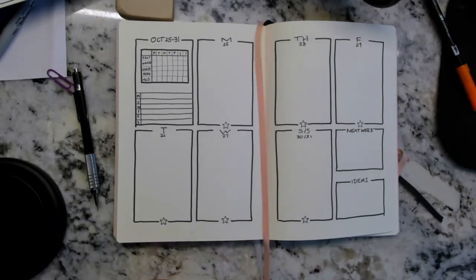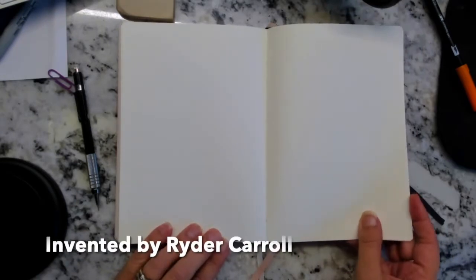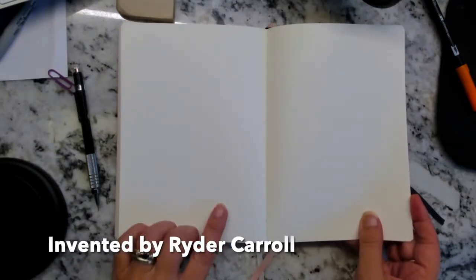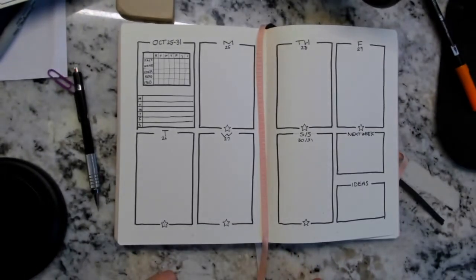I've already set up my bullet journal for the week. So this is a bullet journal - you probably can't see with the resolution, but it has tiny dots in a grid pattern, which allows you to make lines any way you want.